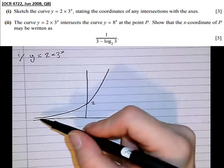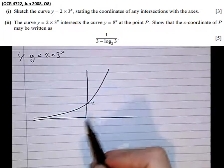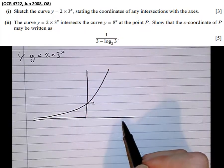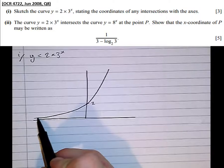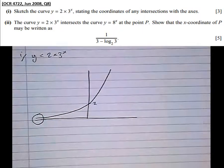One point where my example might lose marks is, first of all, I haven't drawn it with a ruler. And secondly, here, my asymptote appears to be getting slightly further away. So an examiner might mark that a little bit more harshly, and you might lose a mark for it.